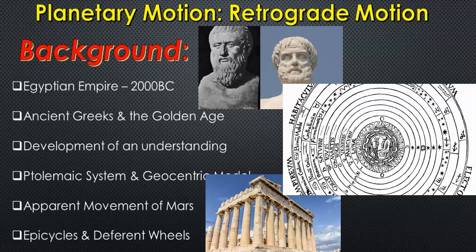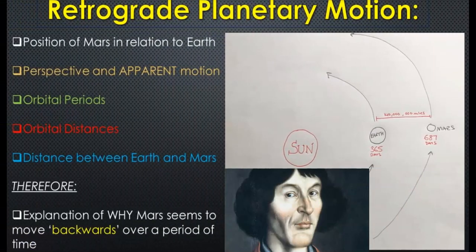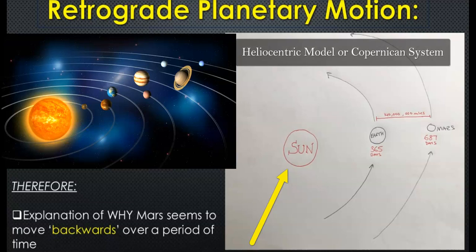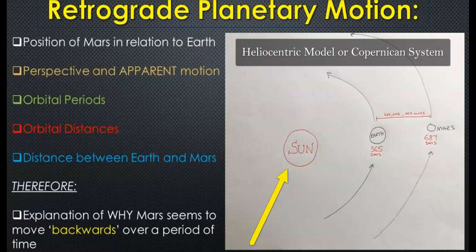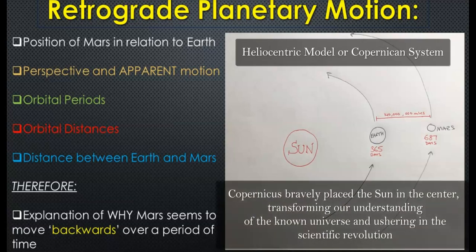They saw retrograde motion in action with Mars, but used epicycles to try and figure it out. It wasn't until the Copernican revolution — the theory Copernicus put forward, born 1473 and dying 1543 — that he published his new model theory placing the sun in the center of our moving planetary objects, as opposed to the geocentric model. Copernicus published this model on his deathbed in 1543 because of fear of the Catholic Church and retribution for being called a heretic. This is called the heliocentric model, and it enabled astronomers and scientists to accurately explain retrograde motion.